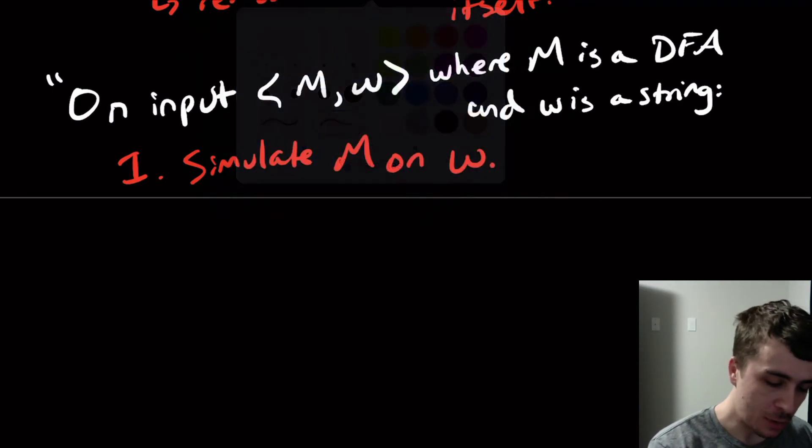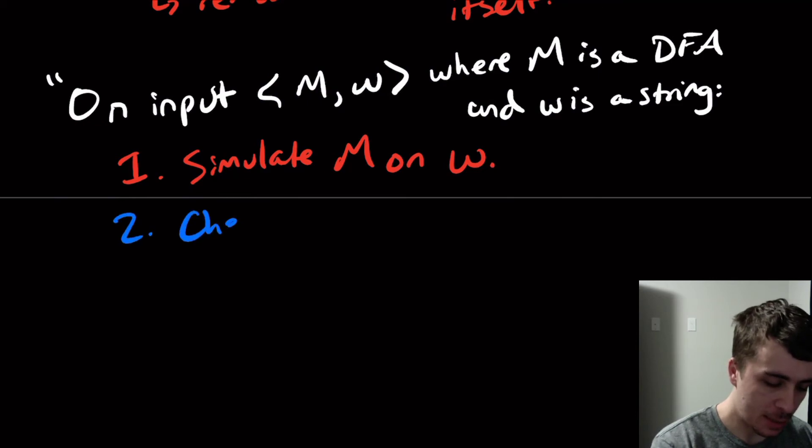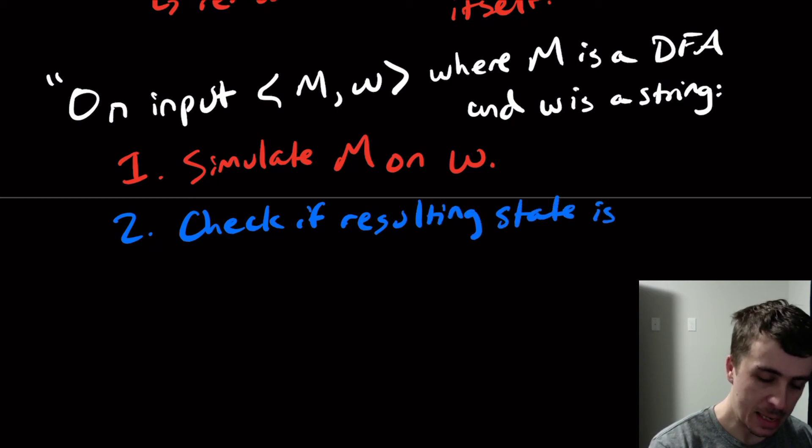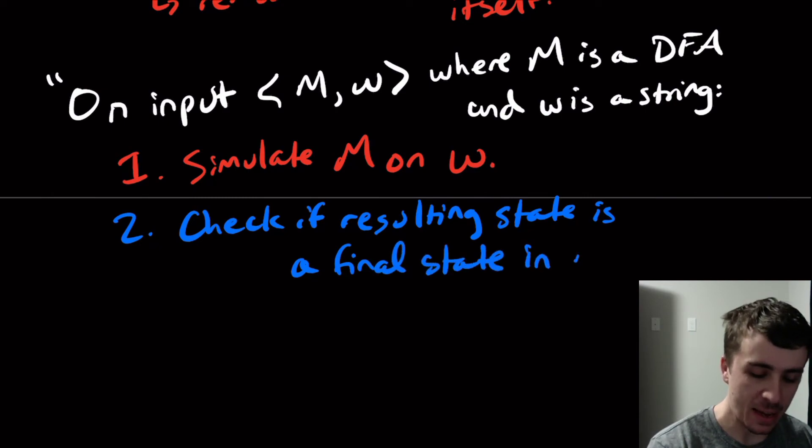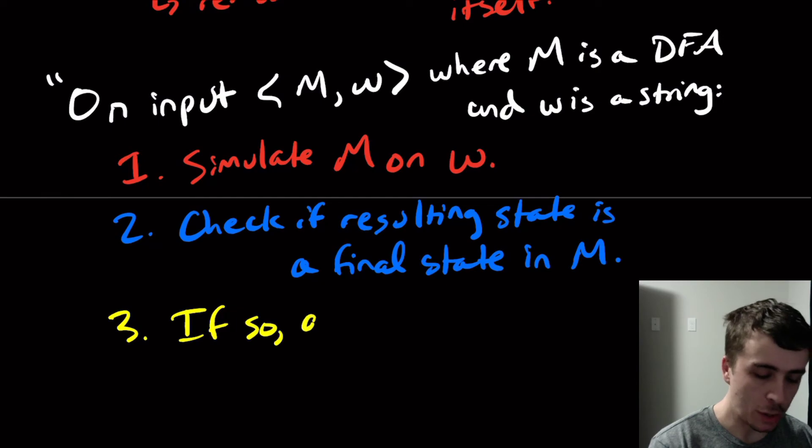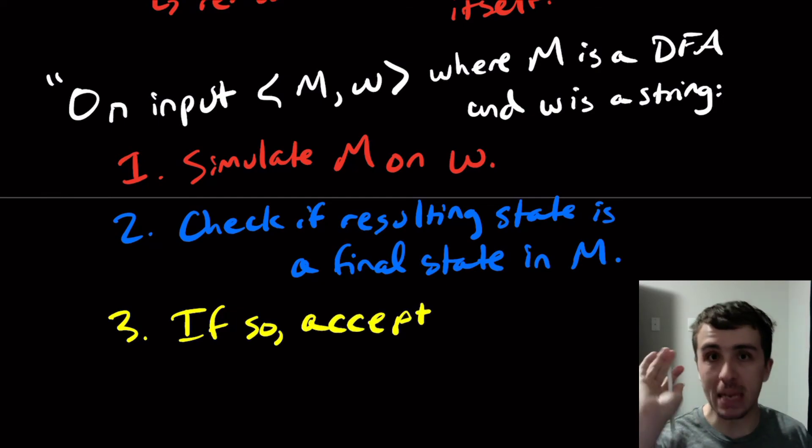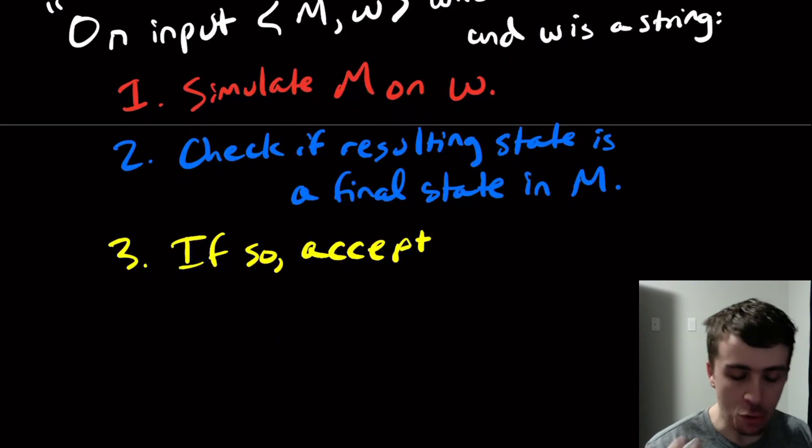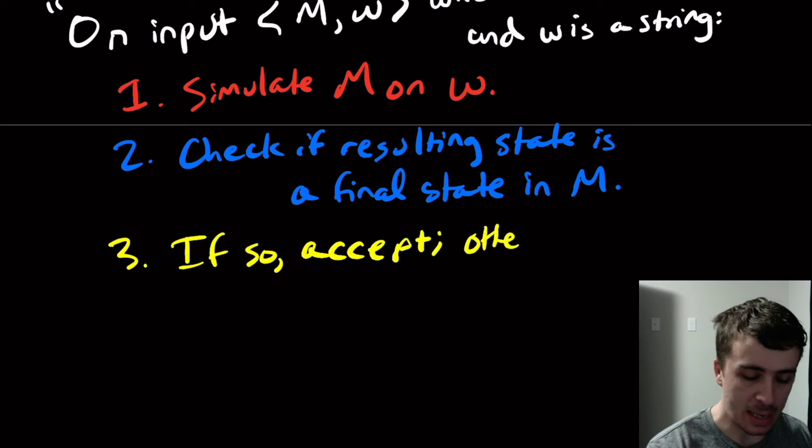So I assume that there's a procedure like the one we just described that simulates a DFA on some input. And then what we do after that is we check if the resulting state is a final state in that DFA, in the original DFA. And then once we do that, we say if so, we're going to just say the word accept and nothing else, which means we immediately go to the accept state if we wanted to think about the details, and then otherwise reject.